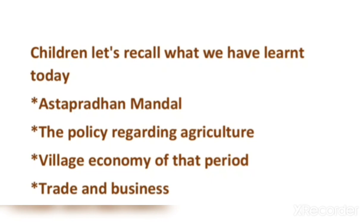Let us recall what we have learned today. Ashtapradhan Mandal means Council of Eight Ministers. Shivaji Maharaj appointed a council of eight ministers; the administration was divided into eight departments with a head for each, constituting the Ashtapradhan Mandal. Agriculture was the main occupation in villages; Maharaj paid attention to the welfare of farmers. Farmers gave a definite share from their produce to artisans — this share was called the Baluta system.